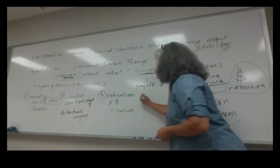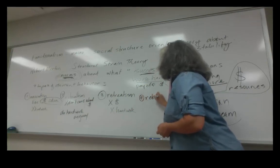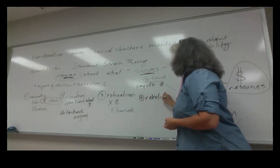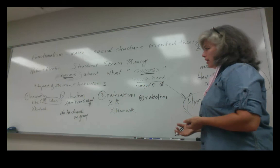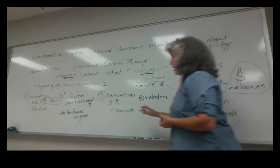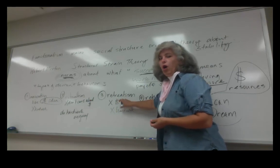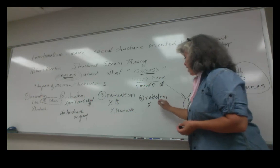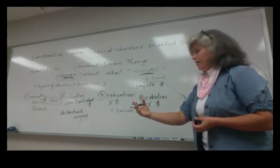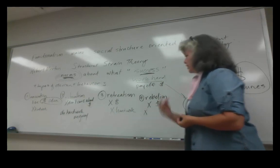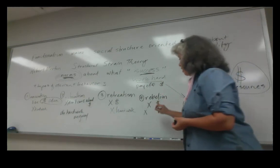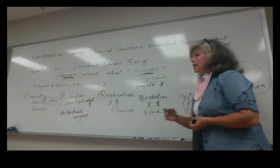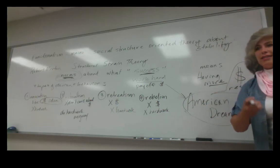The last type of deviance Robert Merton identified is rebellion. Rebellion starts out like retreatism — rebels don't care about money as their ultimate goal and don't want to participate in the American norms of hard work. Instead, they completely reinvent a society of their own, rejecting the existing social structure entirely.